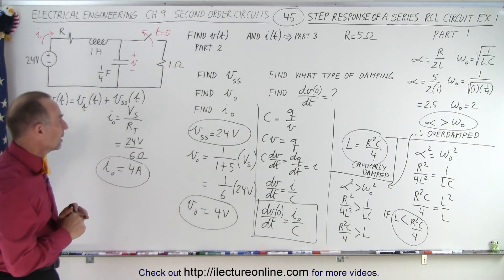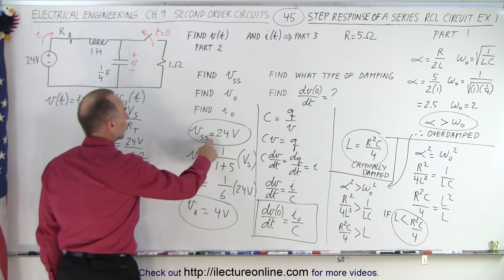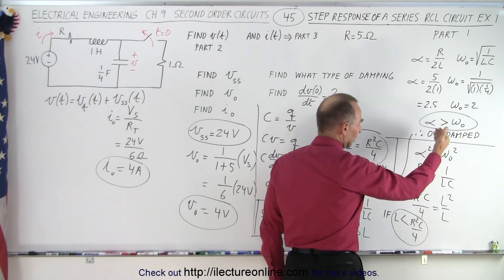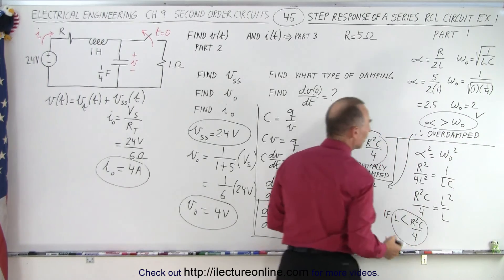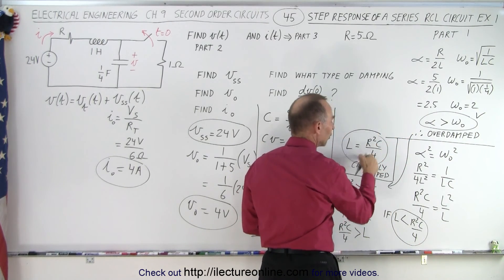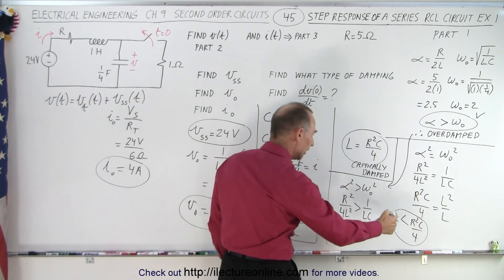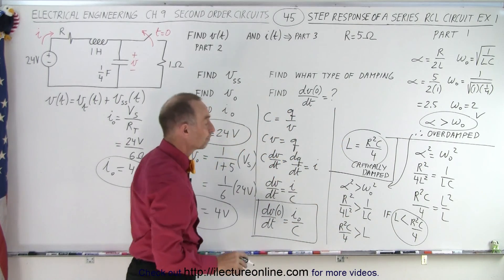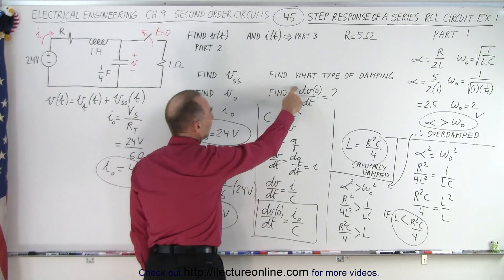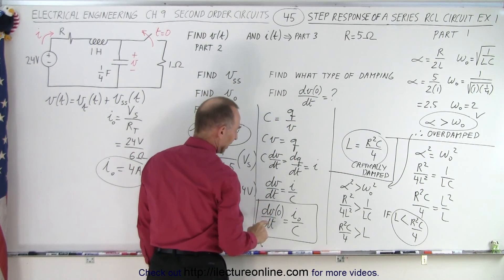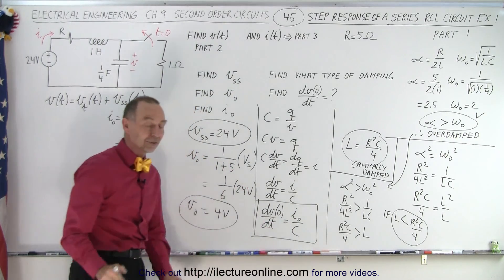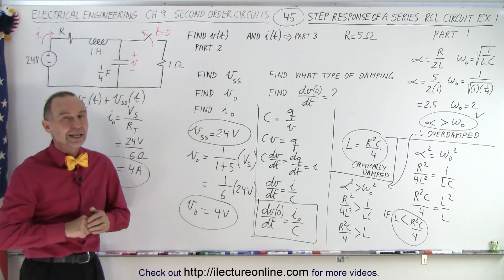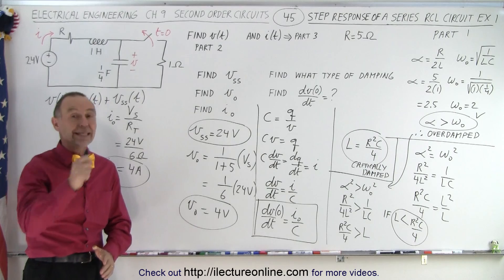So these are the things we need to know: how to find the steady state voltage, the initial voltage, the initial current, and what type of system we're dealing with — overdamped, critically damped, or underdamped — by comparing alpha to omega, or by comparing L to R squared C over 4. We also need the derivative of voltage with respect to time at t=0, which equals the initial current divided by capacitance. Once we know all that, it's pretty easy to solve the rest of the problem. We'll start part two in the next video.